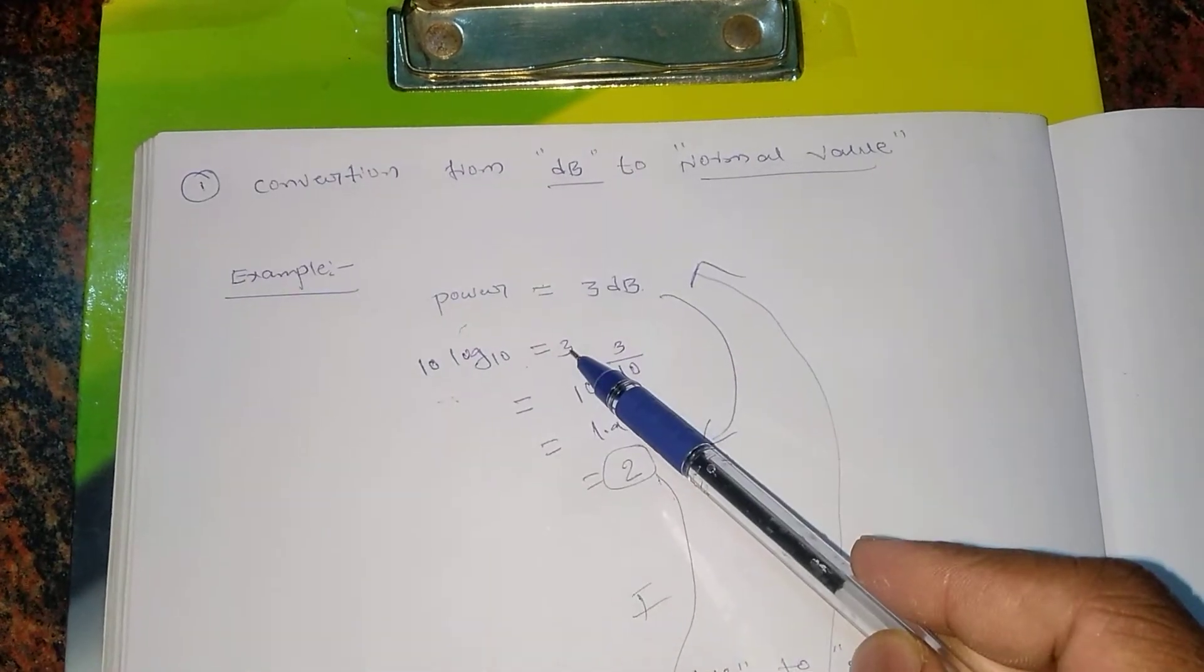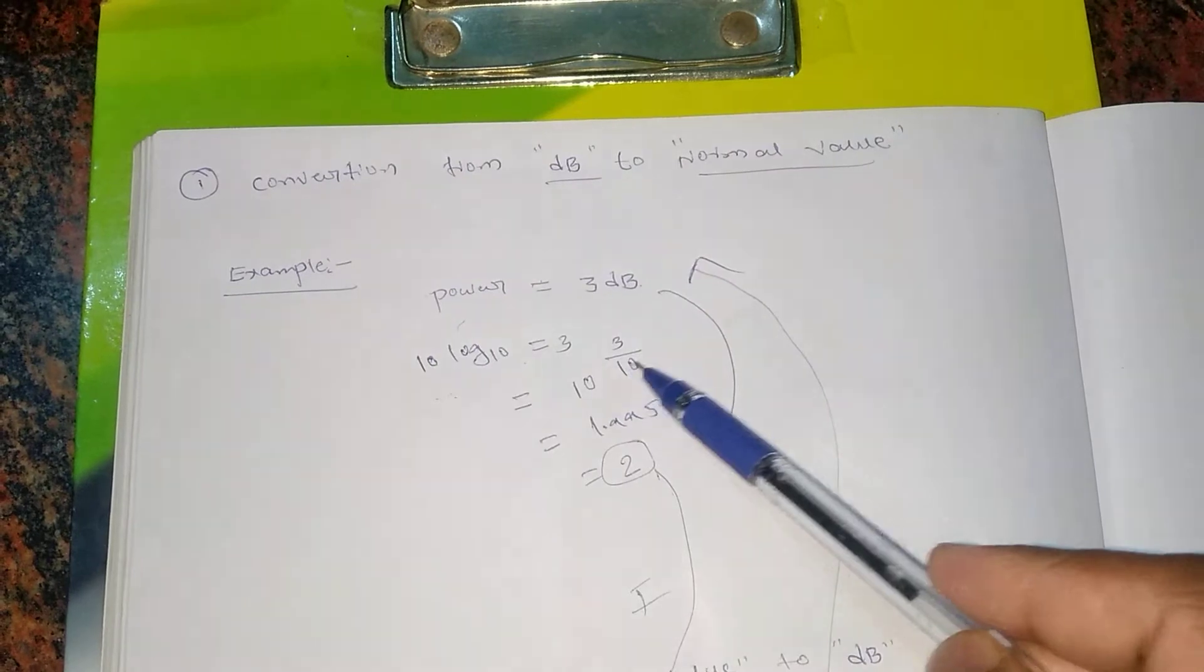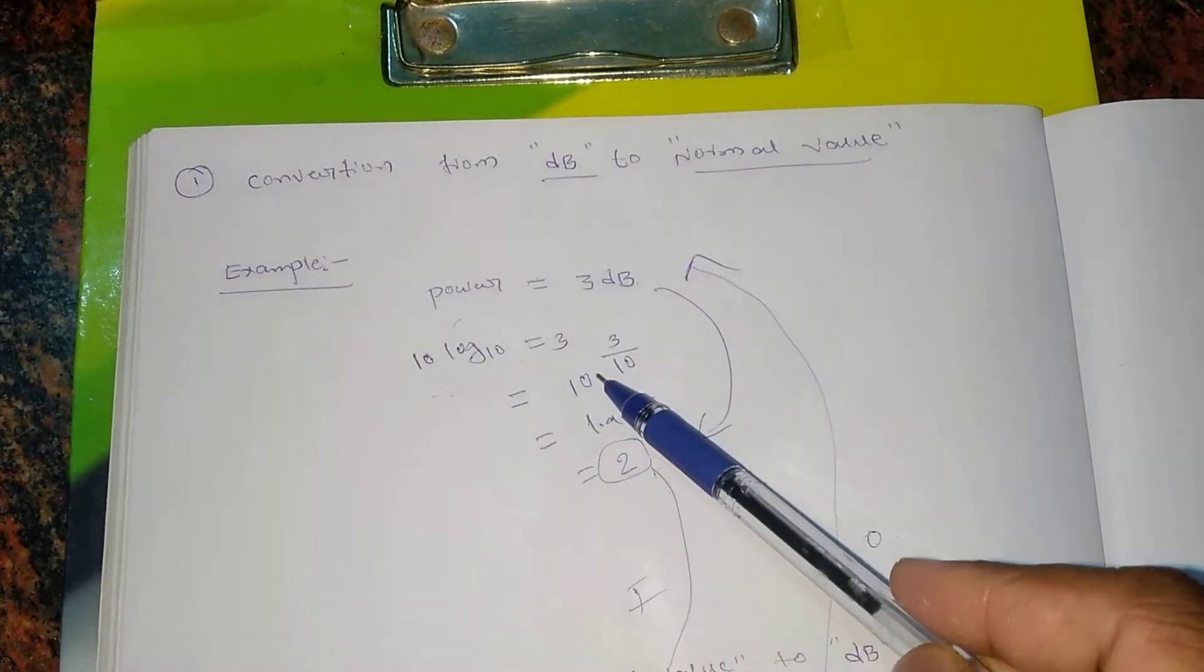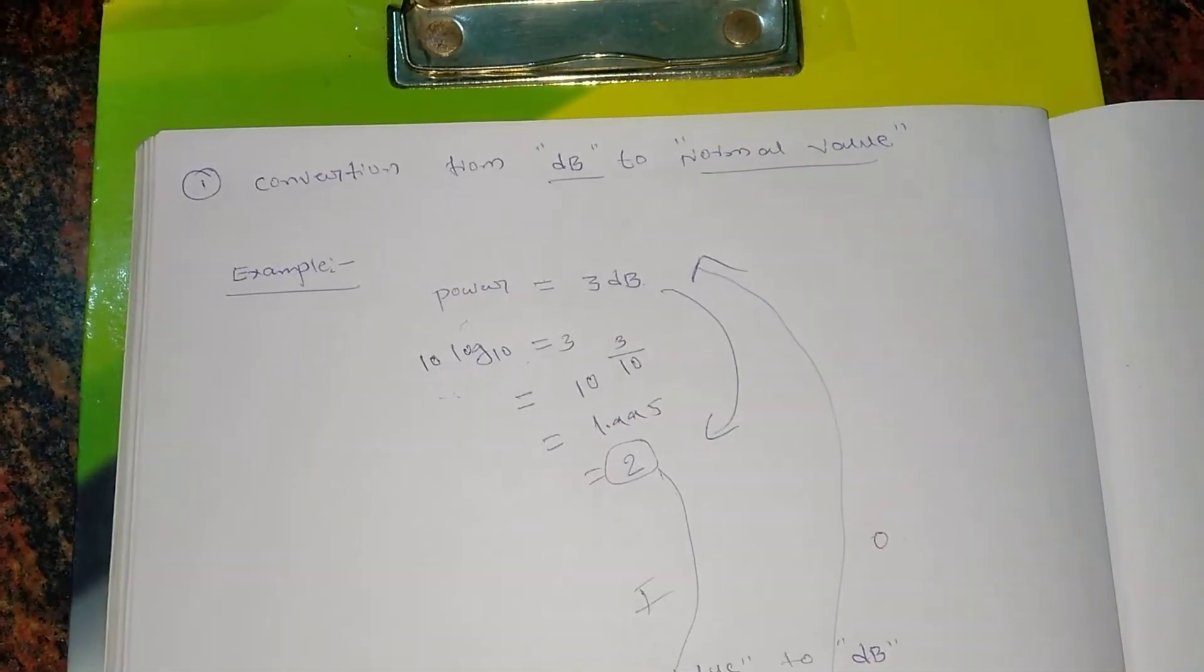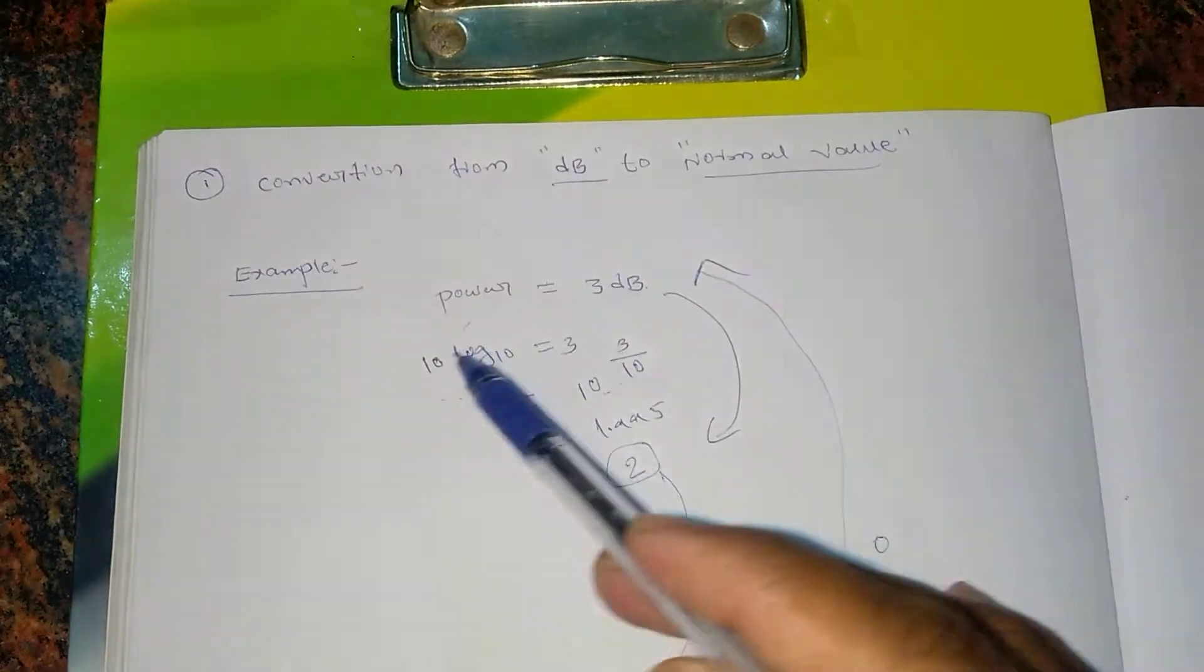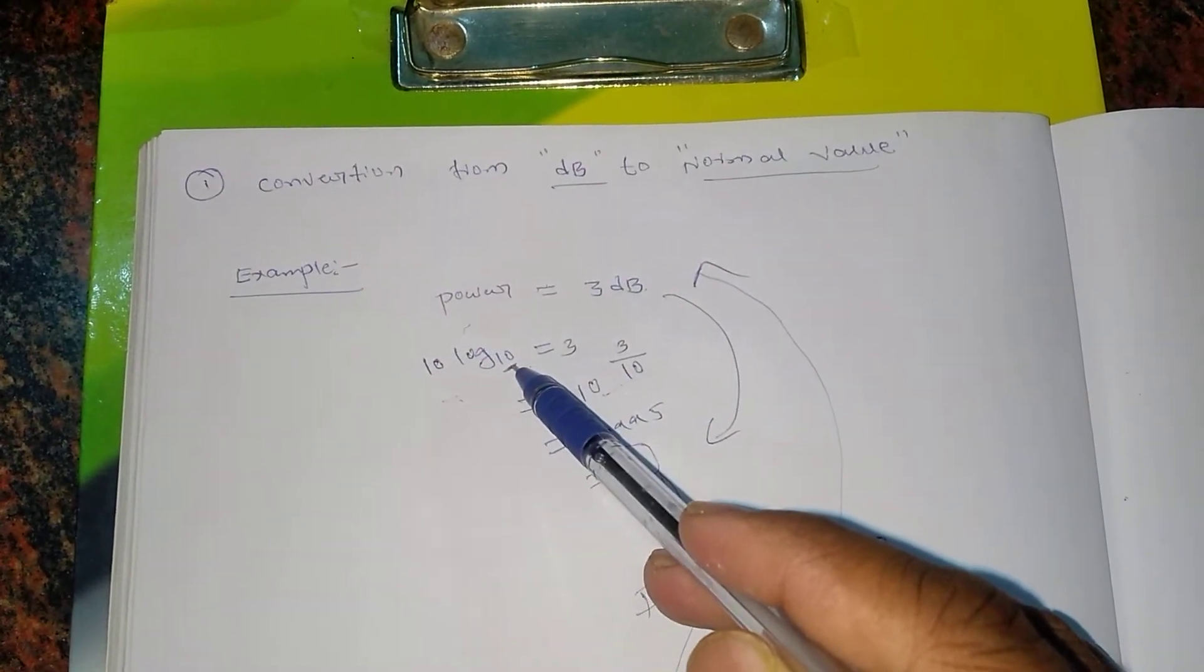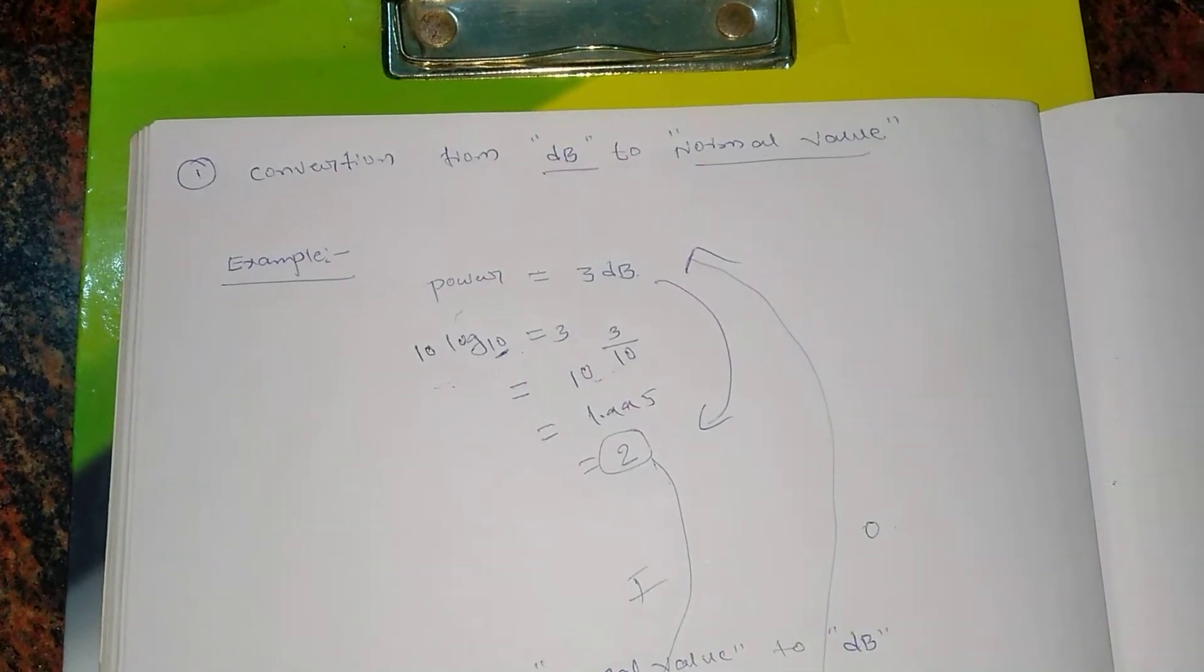After that, I need to take this 10 to the right hand side here, and this 10 will be going as a denominator. So log 10 of P equal to 10 to the power 3 by 10. This is the standard one - whatever value will be there divided by 10 you have to write, which is taken from here.